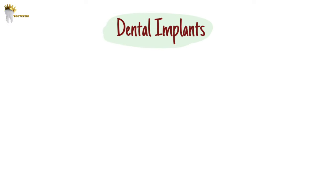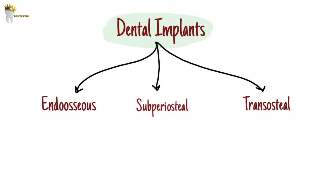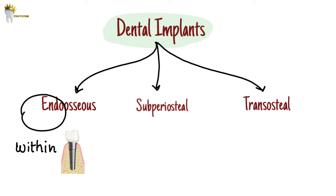Implants are broadly classified as endosseous, subperiosteal, and transosteal. Endo means within, so endosseous implants are the implants that are placed within the jawbone.